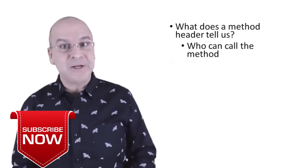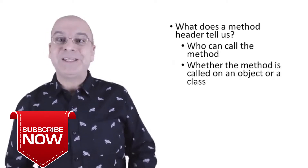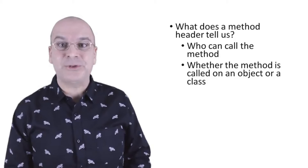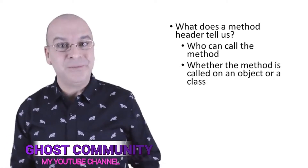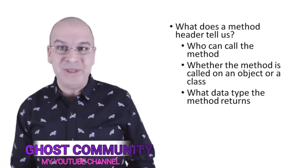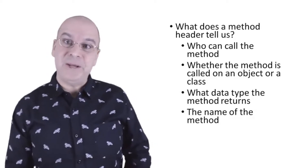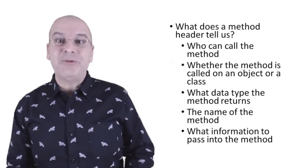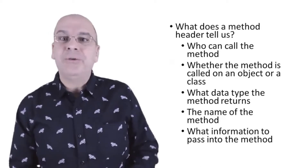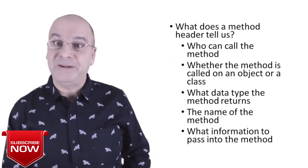A method header tells us who can call the method. It tells us whether the method is called on an object or a class. It tells us what data type the method returns. It gives us the method name. And finally, it tells us what information we pass into the method when we call it.